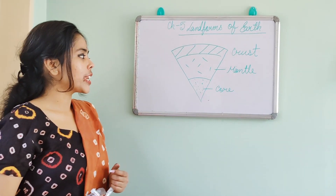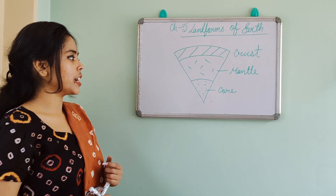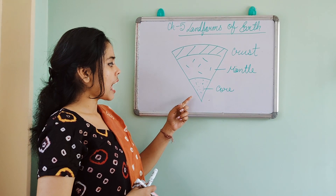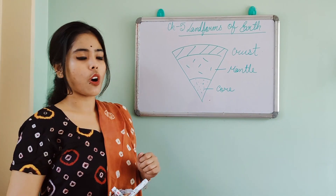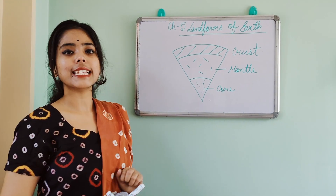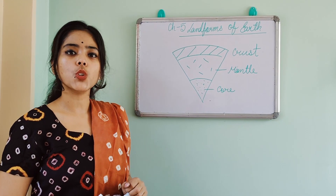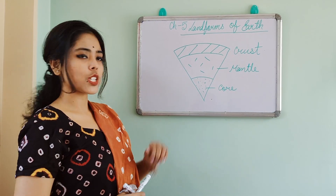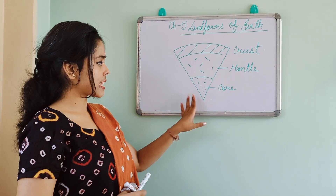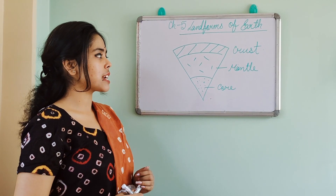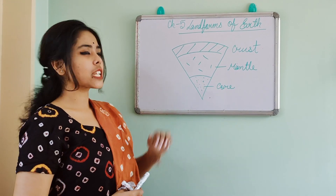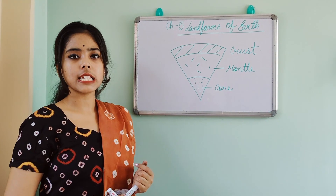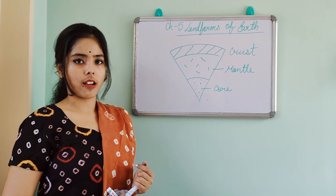If you remember, I told you all that the earth's interior is divided into three parts. One is core, that is the bottommost part. The middle one is mantle, and the uppermost part is known as crust.